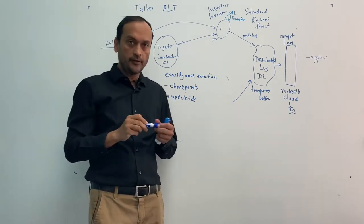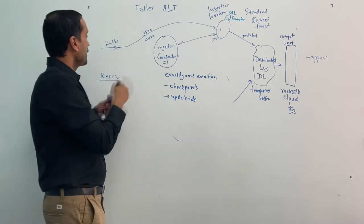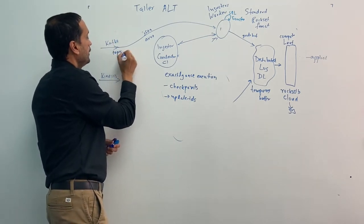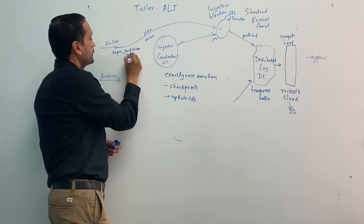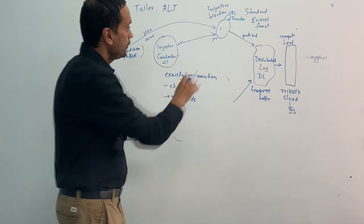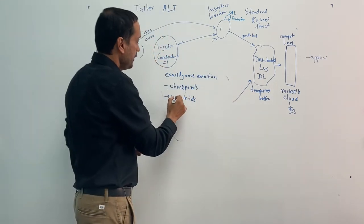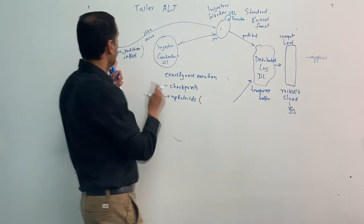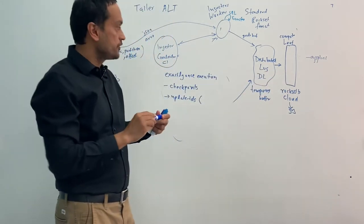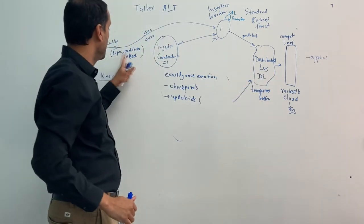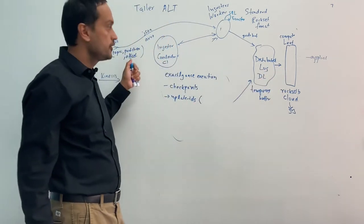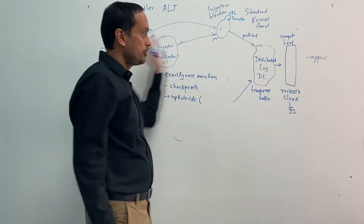What is a checkpoint? Every Kafka stream is identified by a topic, partition, and offset. The worker reads a Kafka message with a topic, partition, and offset. When it writes this message to the distributed log, it writes an update ID. The update ID in the case of Kafka is the topic, partition, and offset. This goes into the distributed log and then to the Leaf. If the Leaf receives the same message — the same update ID of topic, partition, and offset — that it had already processed before, the Leaf will ignore that second message. This is how we implement exactly-once semantics all the way through our data pipeline.